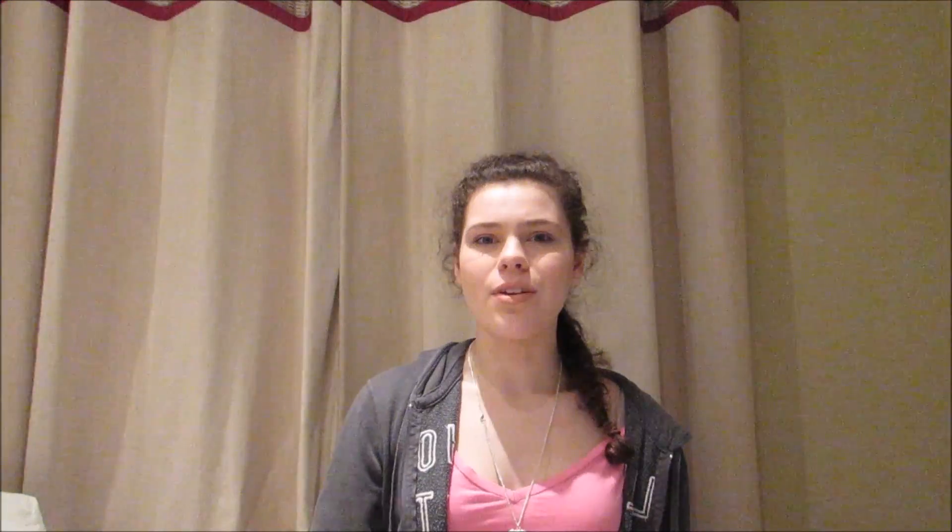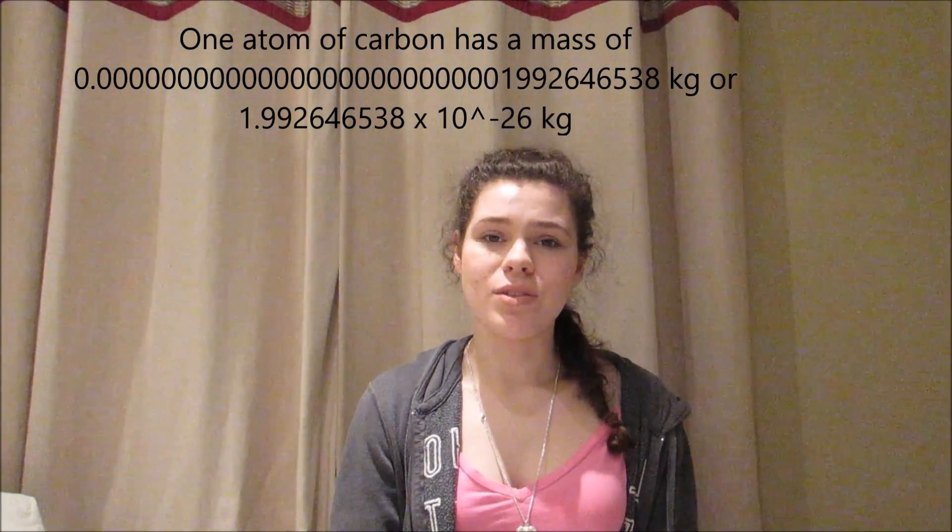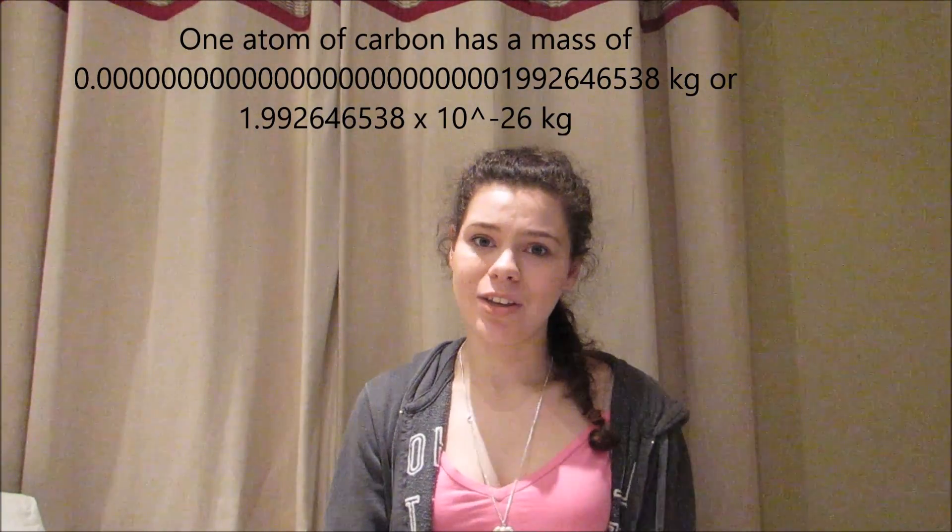Let me move back a bit. Atoms, the things which make up everything, are made up themselves of three types of subatomic particles. Protons, with a relative mass of one. Neutrons, also with a relative mass of one. And electrons, with a mass so small we don't count it. Of course, these are on a relative scale, as the real masses are far too small to use accurately.